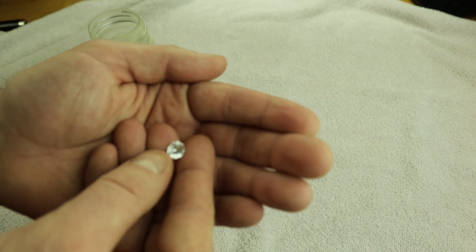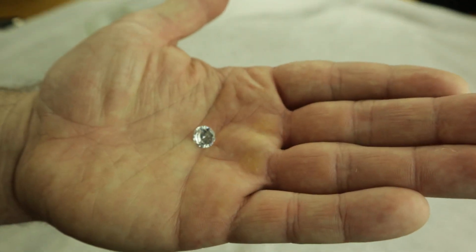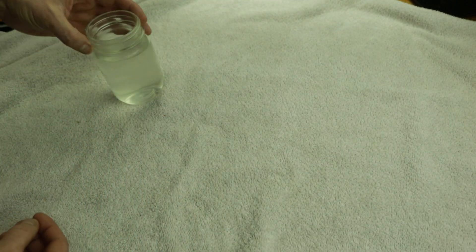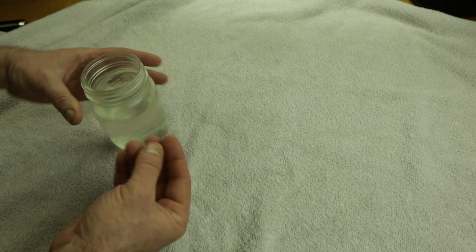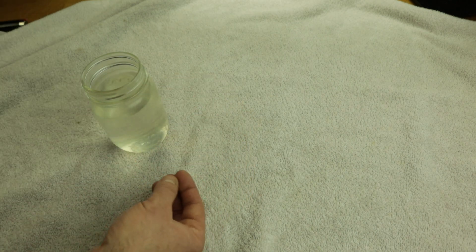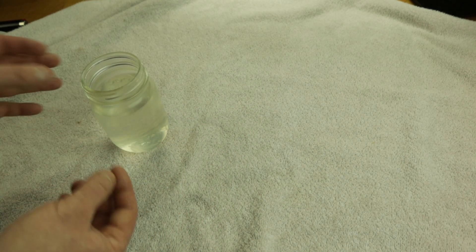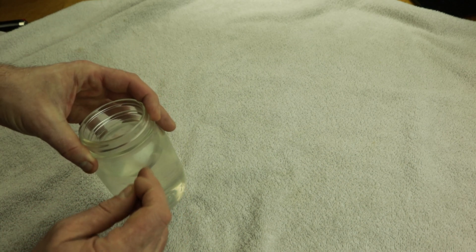So first thing everybody knows about diamonds is that diamonds scratch glass. We have this mason jar right here and I've already done this test off camera. If it can't scratch glass it's definitely not a diamond. Even most fake diamonds will still be able to scratch glass, but that's the first test you really need to do.